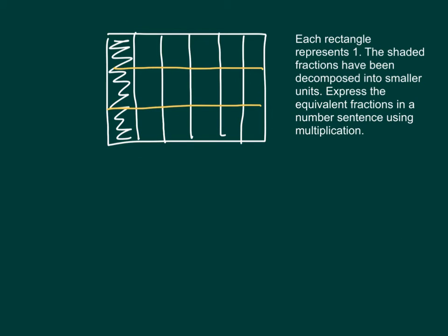Here's another type of problem. Each of these rectangles represents one. The shaded fractions have been decomposed into smaller units. Express the equivalent fractions in a number sentence using multiplication. So, when you look at this here, that's one, two, three, four, five, six. And we're looking at one of those. So, we had that fraction of one-sixth.